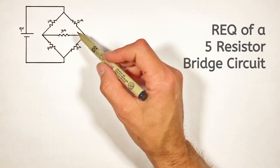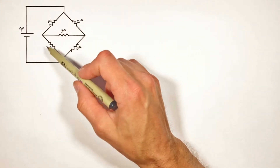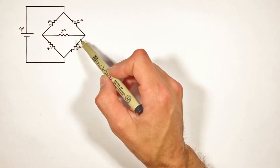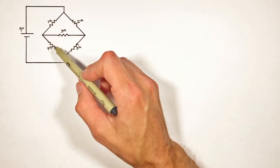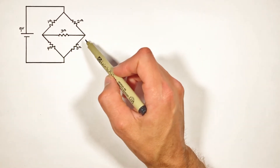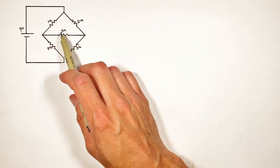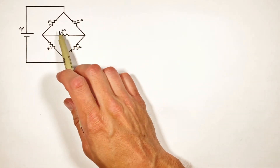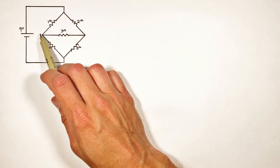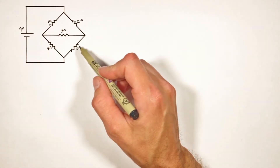Today I'm going to show you how to solve for the equivalent resistance of this bridge circuit, which looks an awful lot like some of the Wheatstone bridge circuits we've tackled in the past. The catch and important difference here is that this bridge circuit has a resistor acting as the bridge from one side of the circuit to the other.